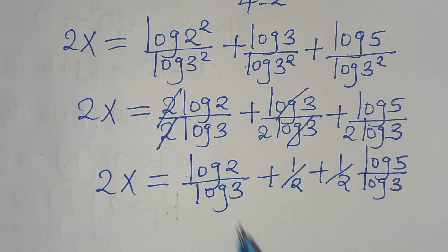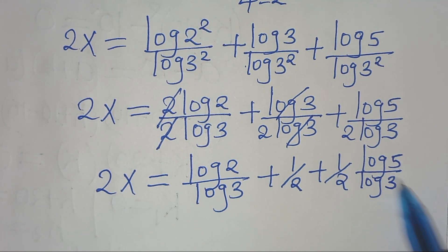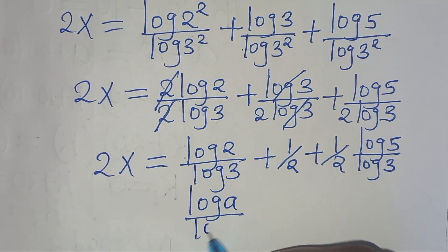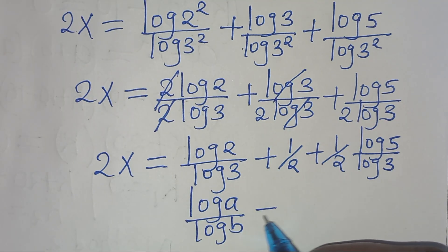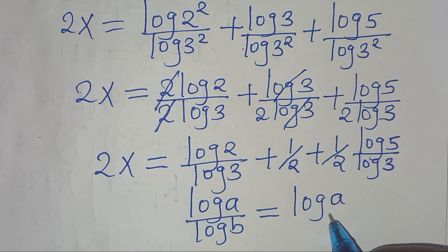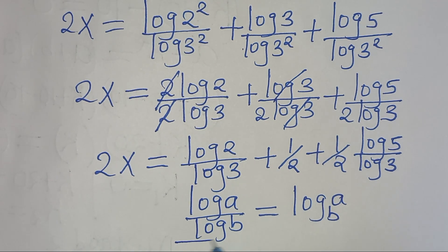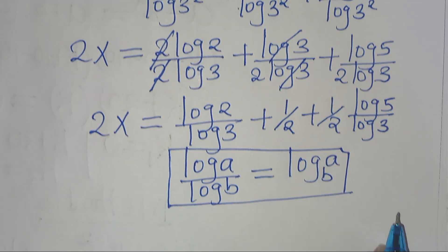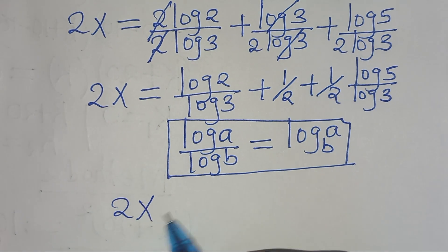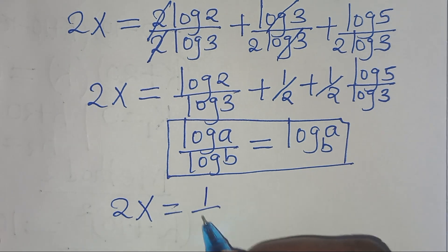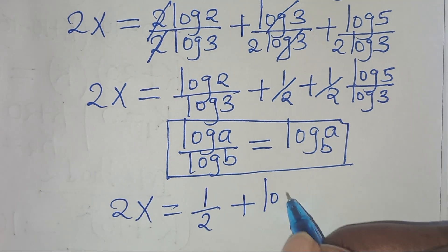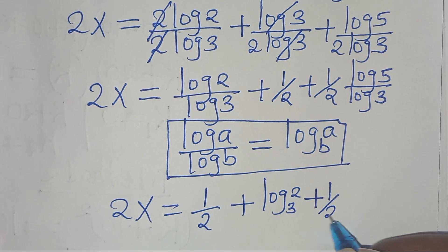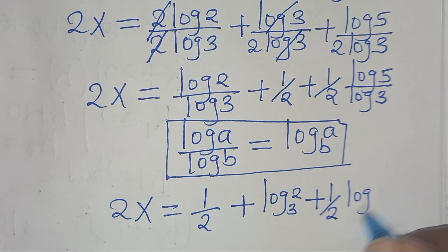The next step: log 2 over log 3 and log 5 over log 3 are each in the form of log A divided by log B, which can be expressed as log A to base B. Applying this change of base property, we have 2x equal to one half, plus log 2 to base 3, plus one half times log 5 to base 3.